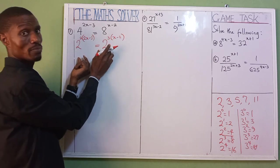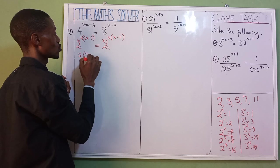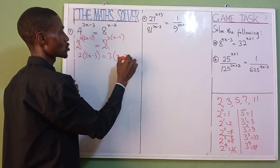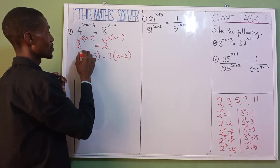We now have the same base, 2 and 2. Two cancels two. So we now have 2 into brackets (2x minus 3) equals 3 into bracket (x minus 2). As you can see, we now have the base. Let's now open our brackets.